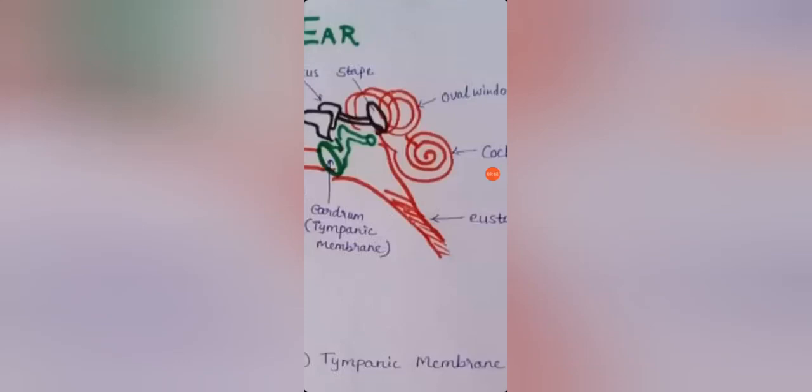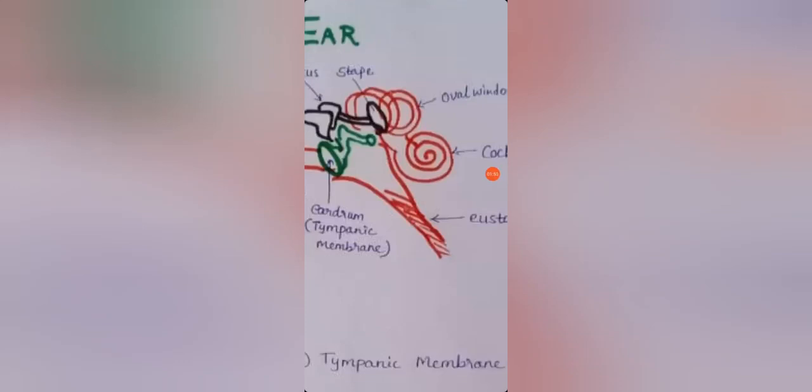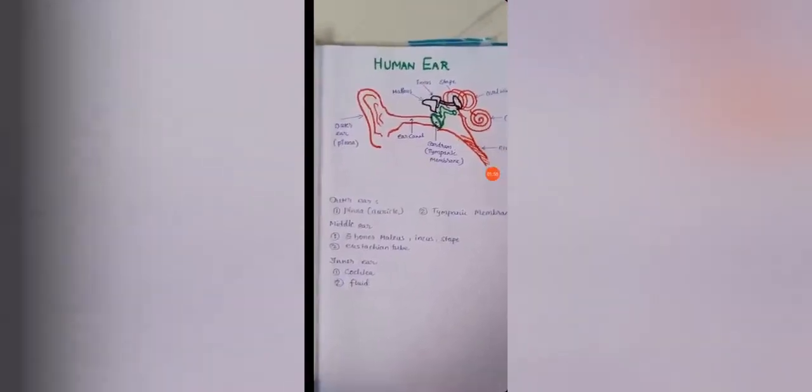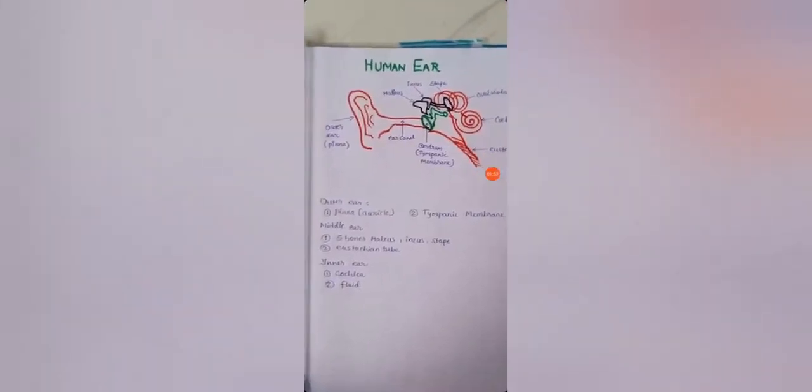The human ear can be divided into three parts: outer ear, middle ear and inner ear. The outer ear is known as pinna or auricle and includes the tympanic membrane which is the eardrum. When sound waves strike they vibrate, the eardrum vibrates.